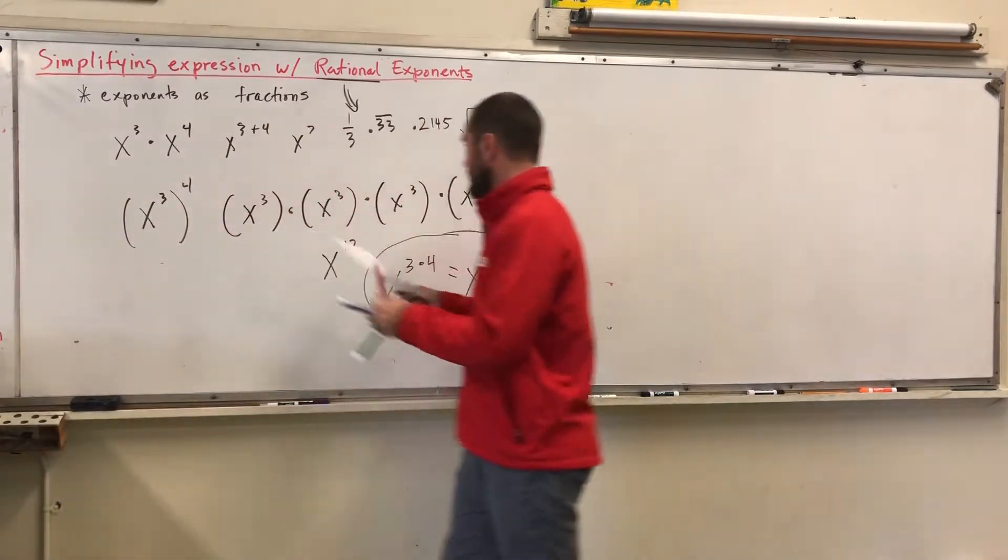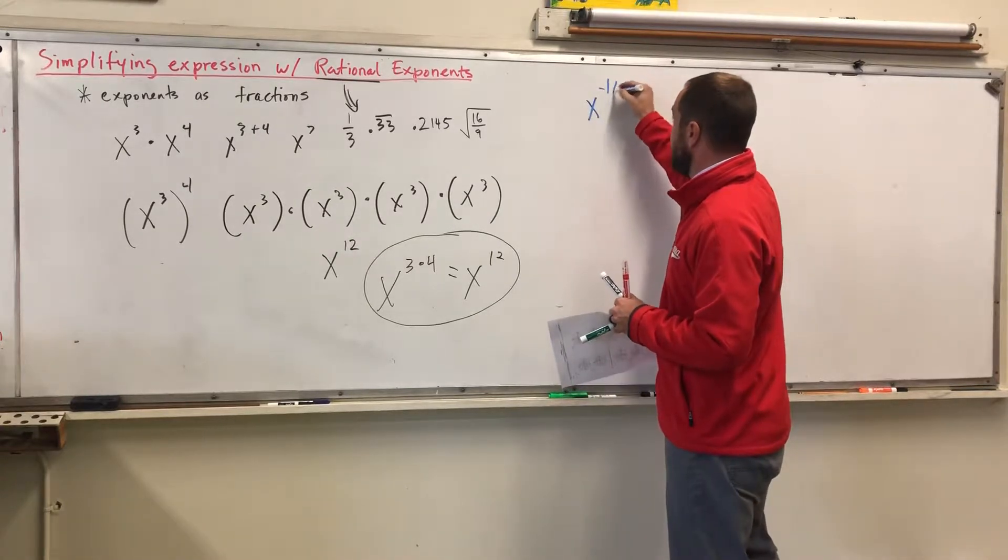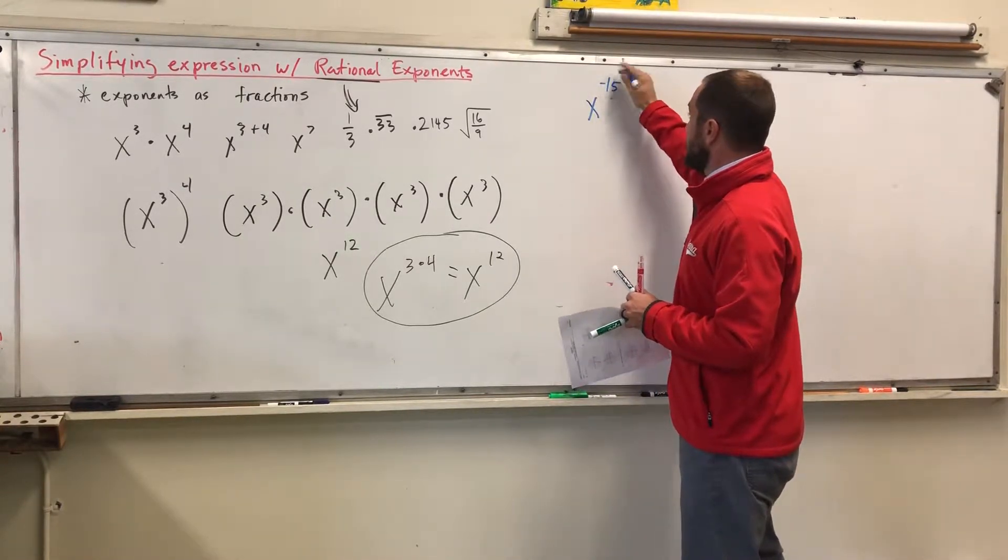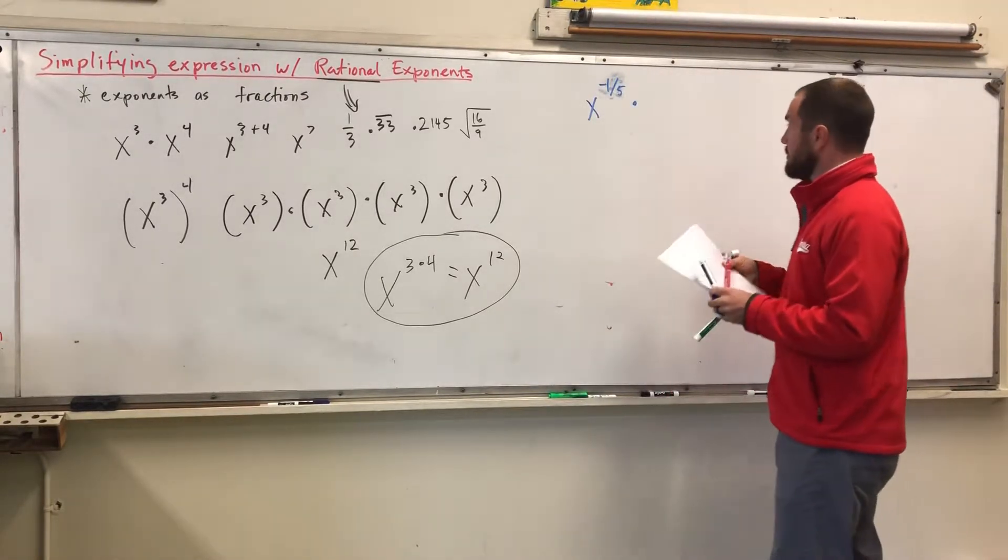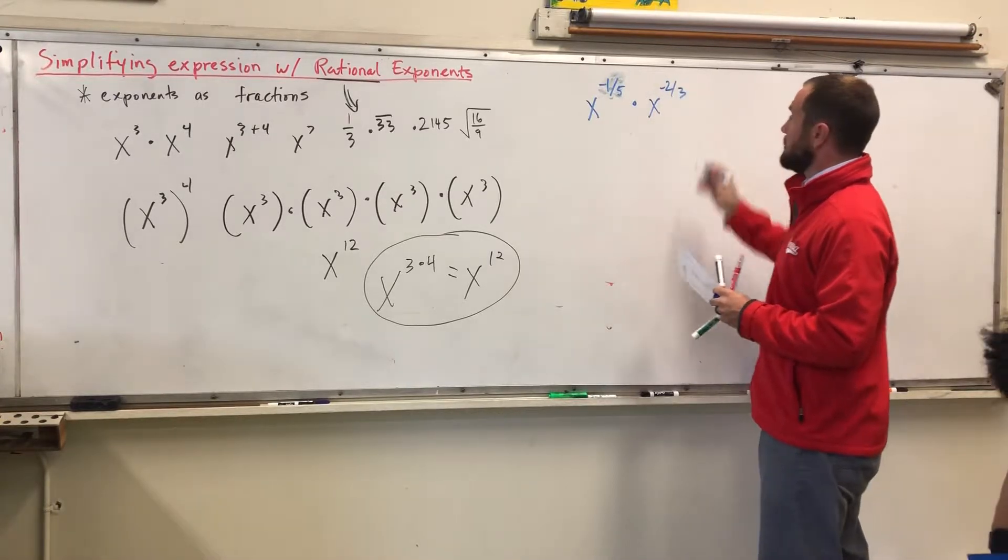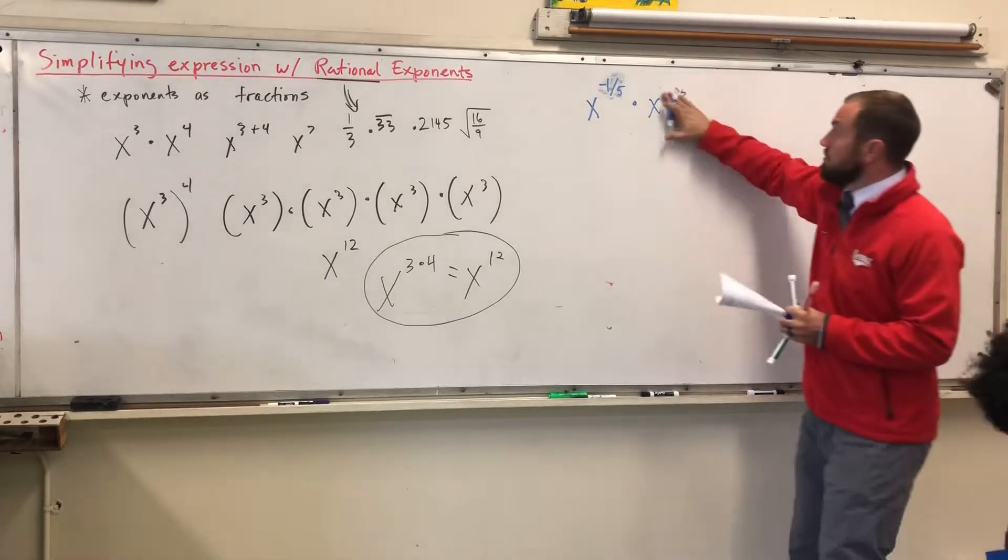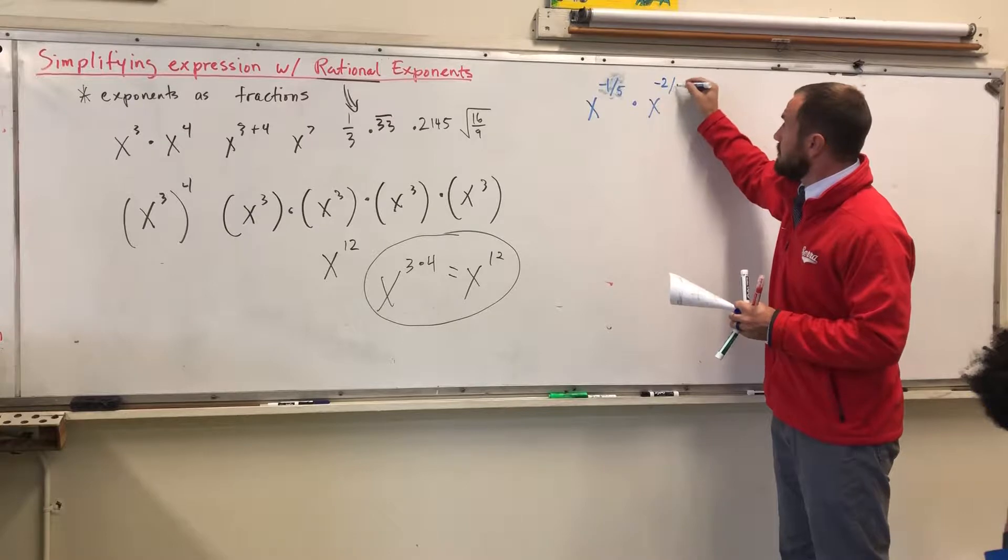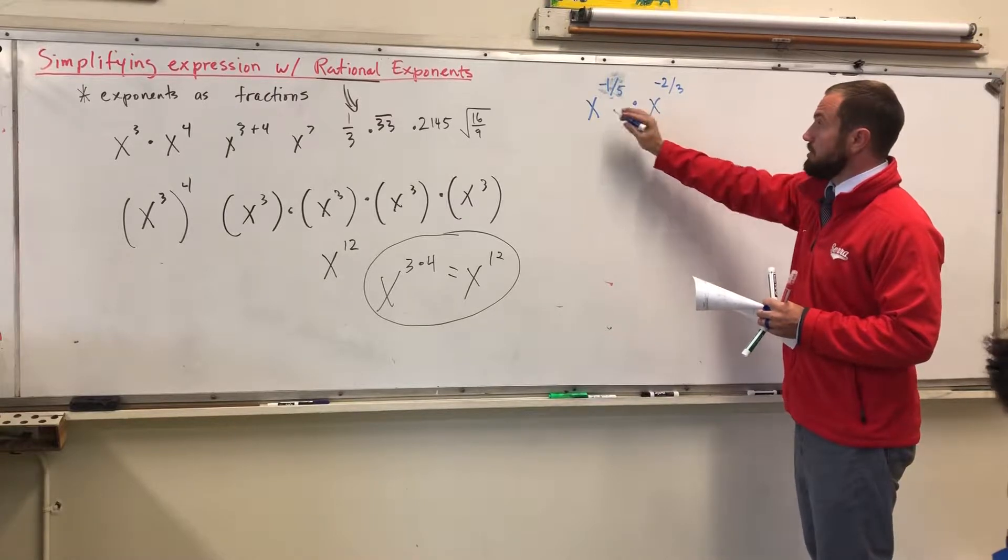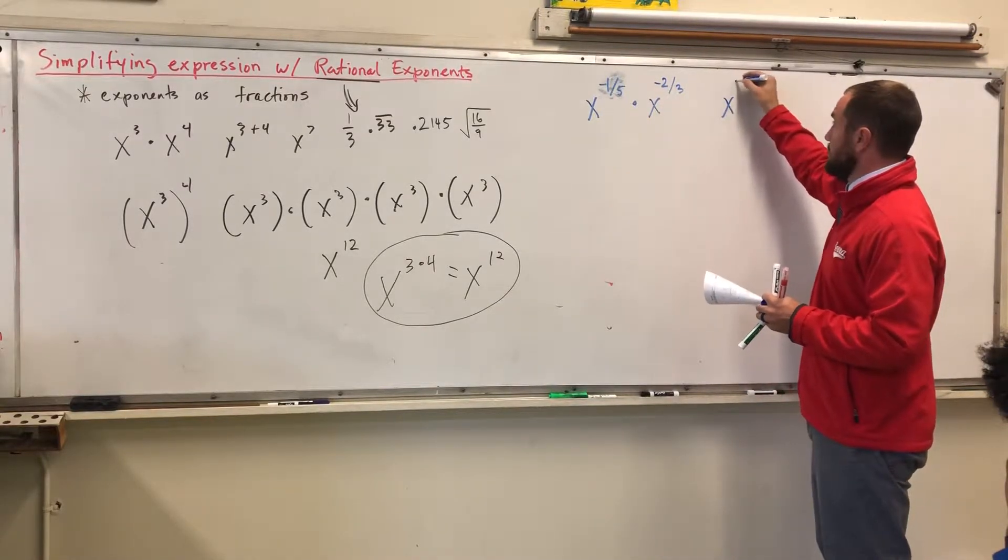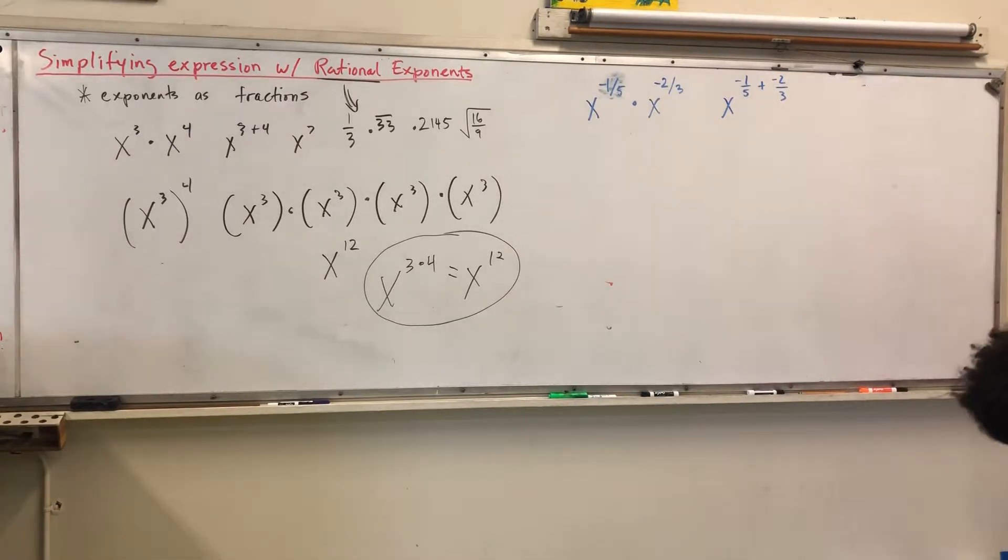Now, let's say you look at a certain example that talks about having those rational exponents. So X to the negative one-fifth times X to the negative two over three. Multiplying variables with exponents. So we're going to actually end up adding these two.